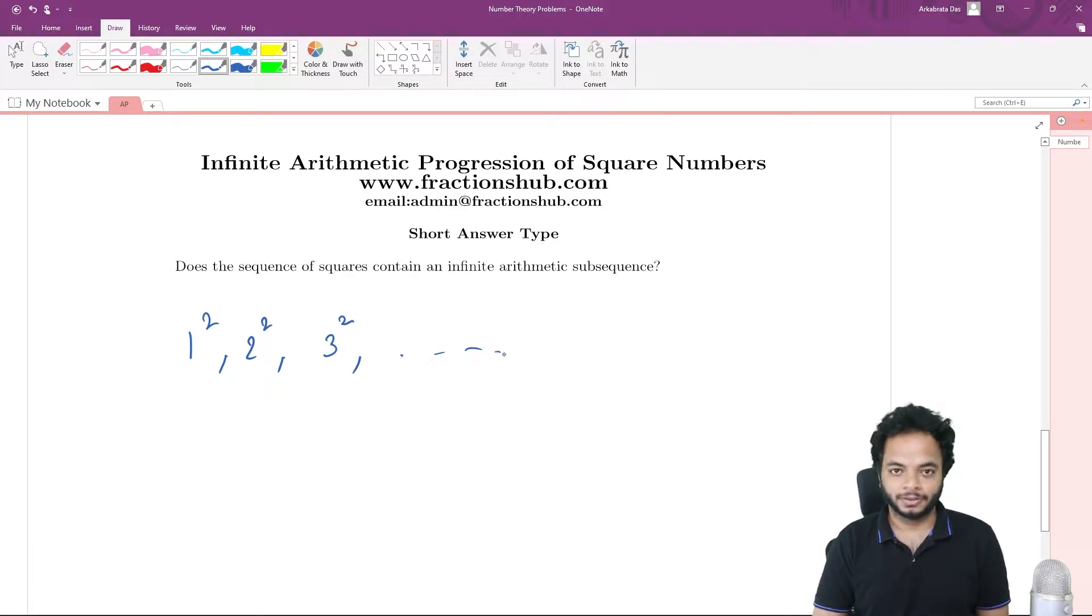It might not be consecutive squares or whatever; you can choose squares from anywhere. The question is, can you get an infinite arithmetic progression out of the perfect squares? Let's see if we can have it or not.